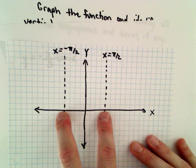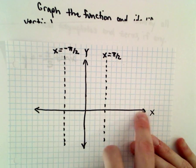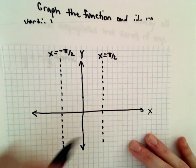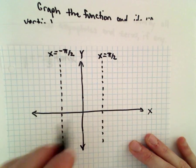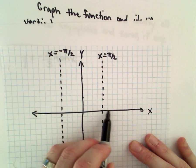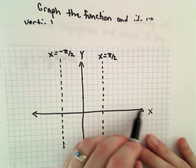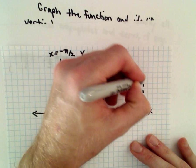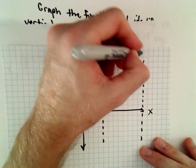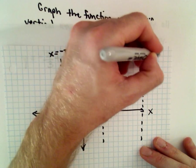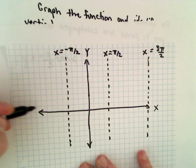The graph of tangent has a period of pi, so every time we move over pi units we're going to get another asymptote. So let's see, 1 2 3 4, 1 2 3 4, and try to keep the scale. That would be another asymptote at 3 pi over 2, and likewise.